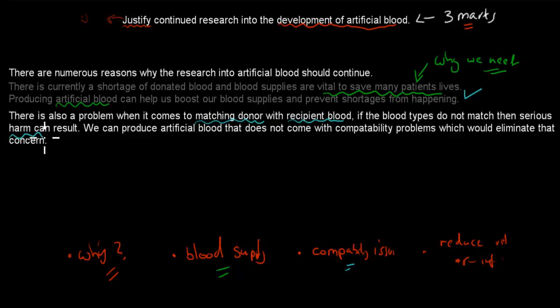We can produce artificial blood that does not come with compatibility problems, which would eliminate that concern. By producing artificial blood, we can make it non-compatibility issue-free, which means that anyone can have that blood. We don't have to make sure that they have the right blood type. That gets you one mark as well. So now we've gotten two out of three so far.